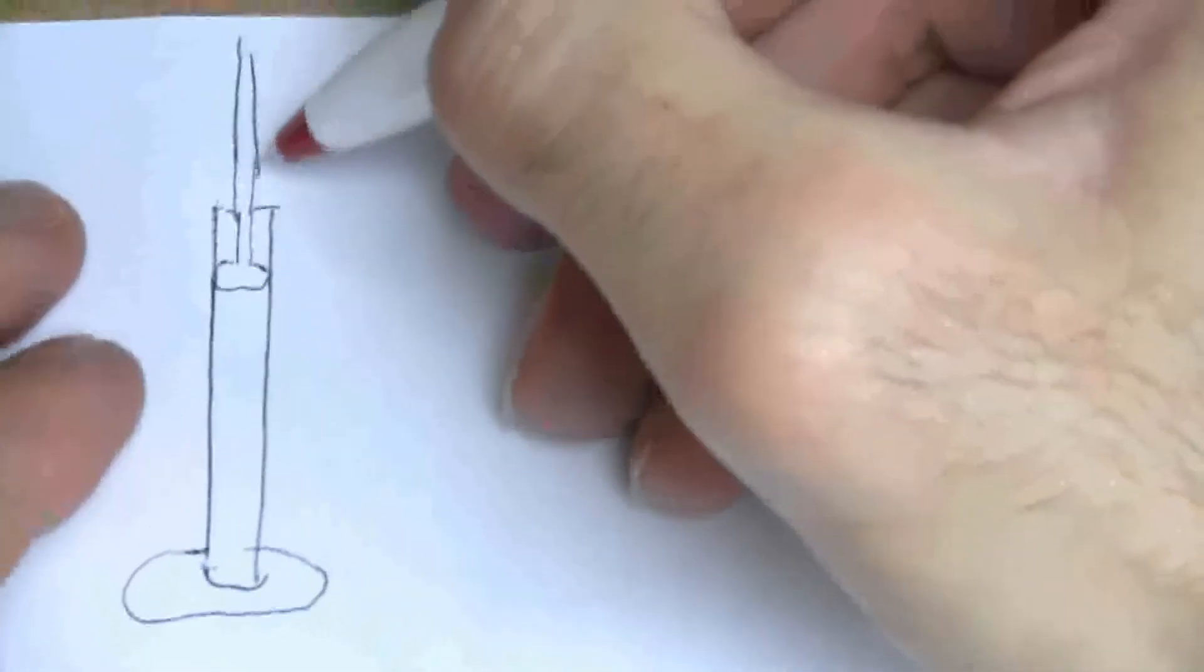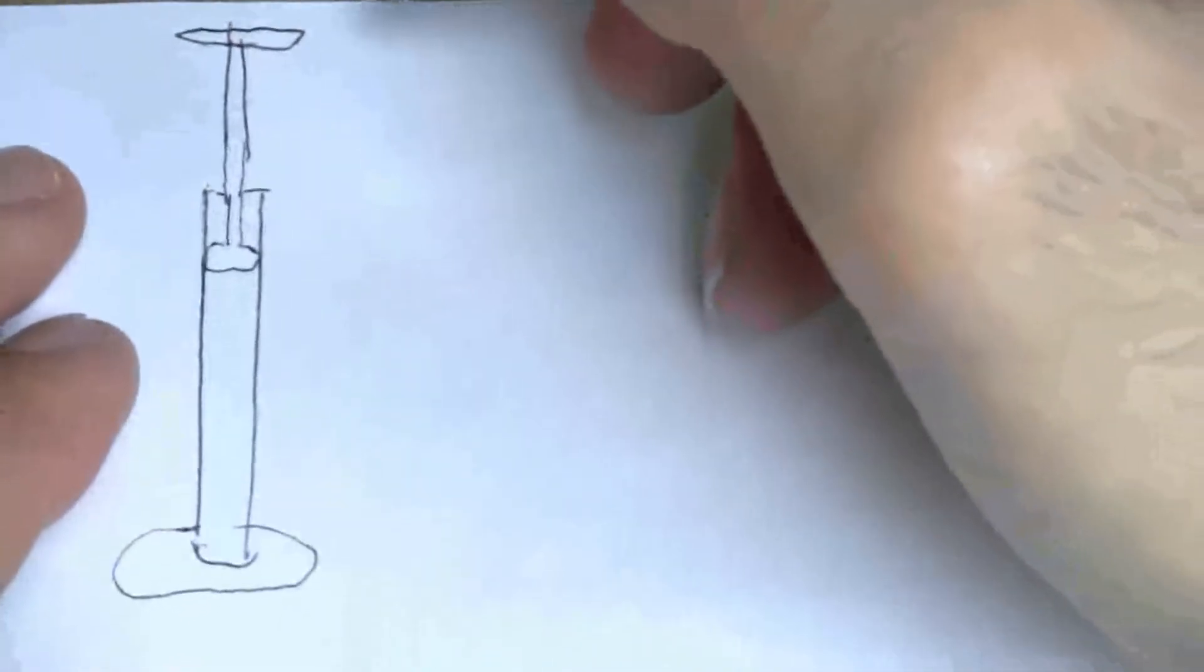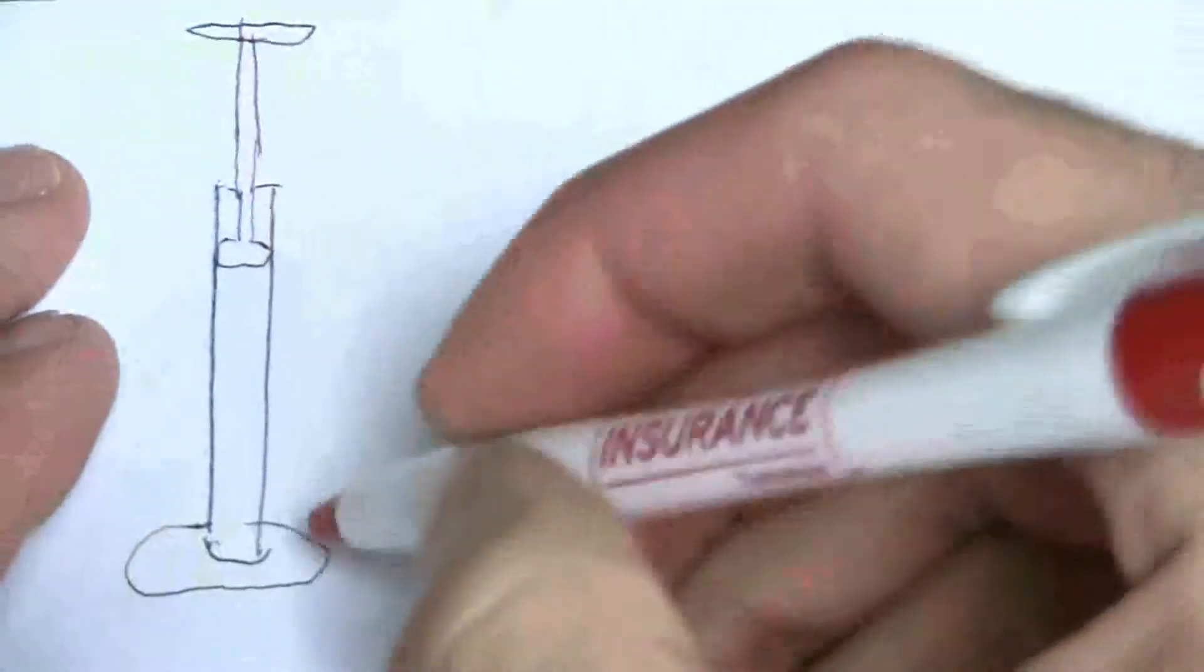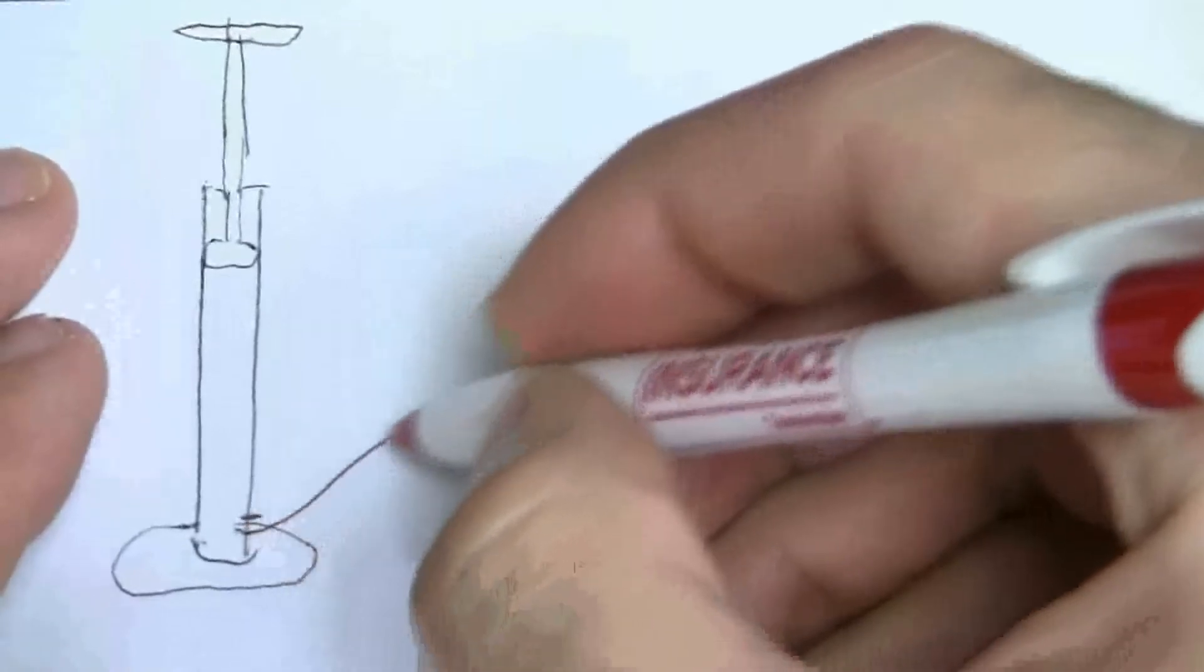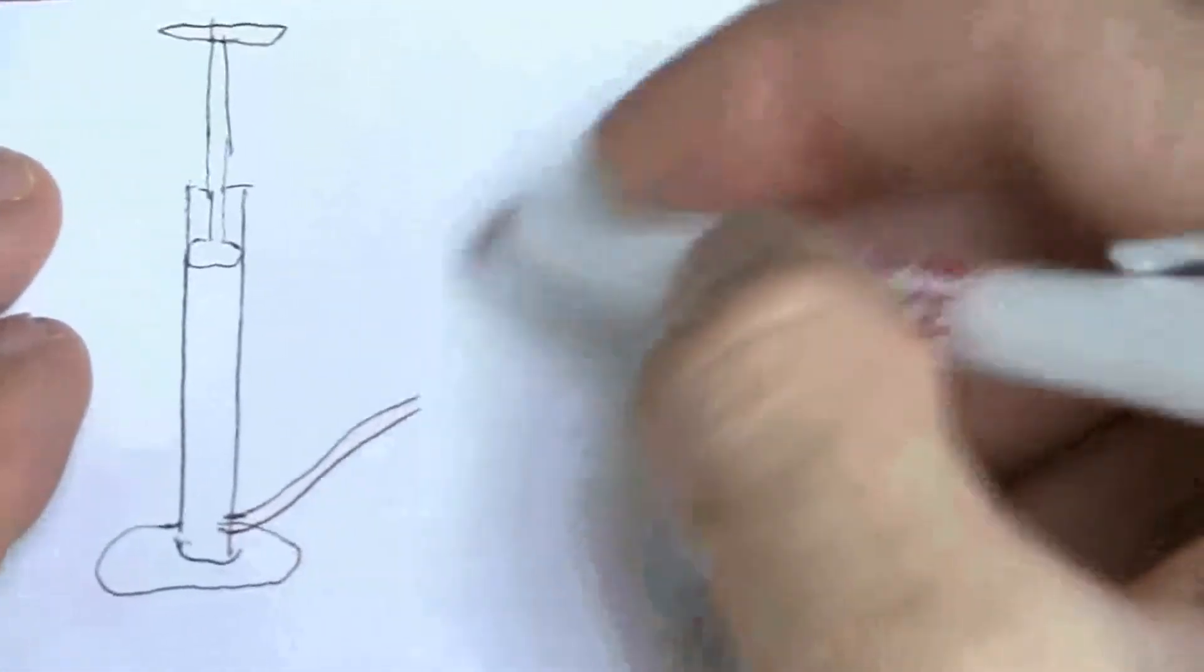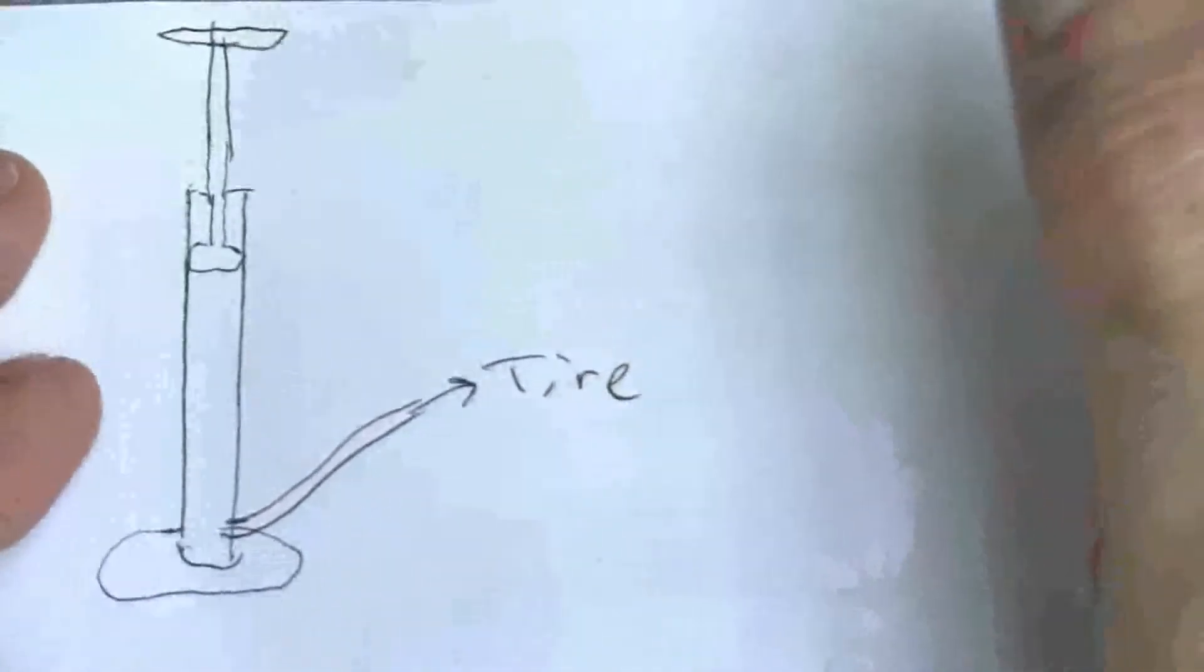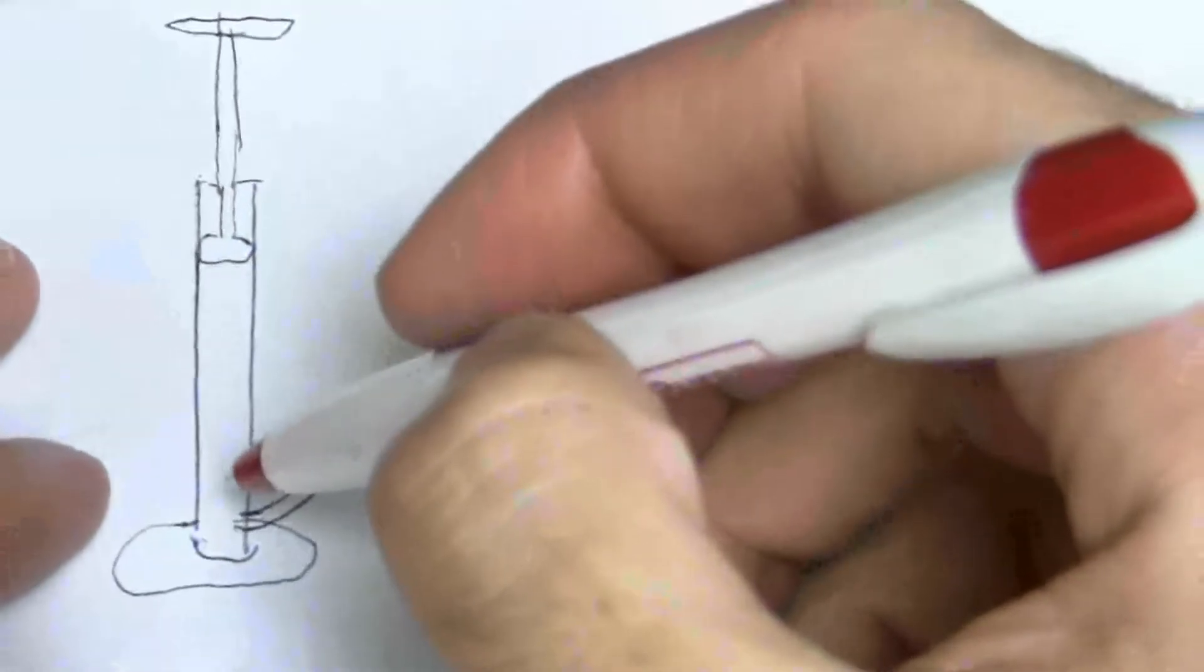And then I have up here my handle. So I push this down, and then there's a valve and my tube. And that goes to the tire. I won't bother drawing that.